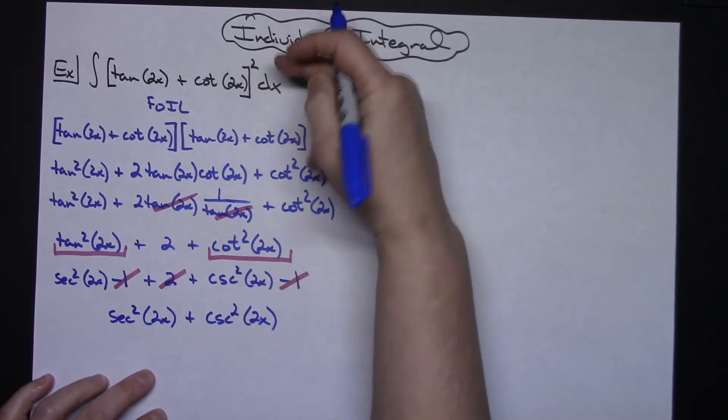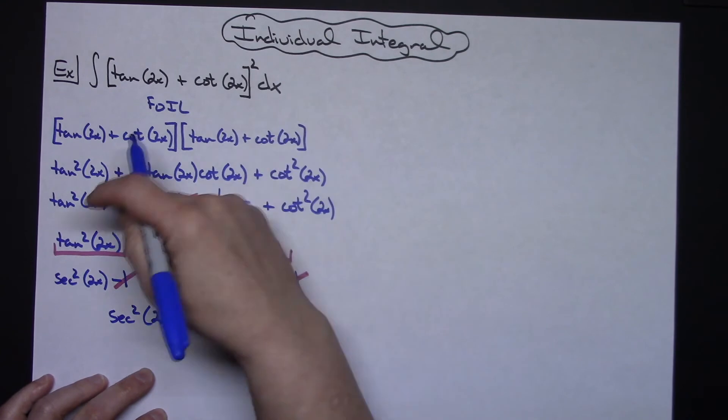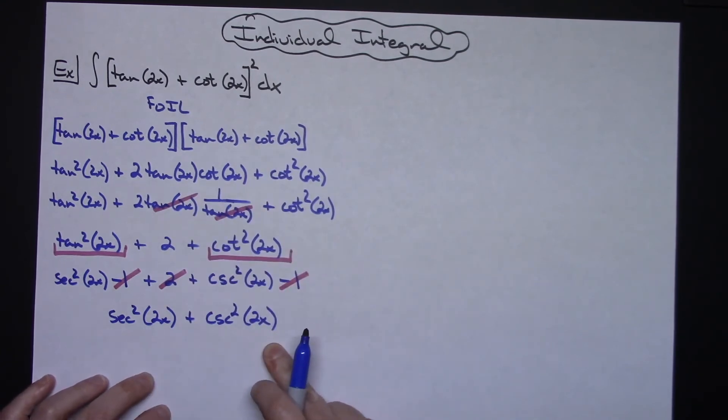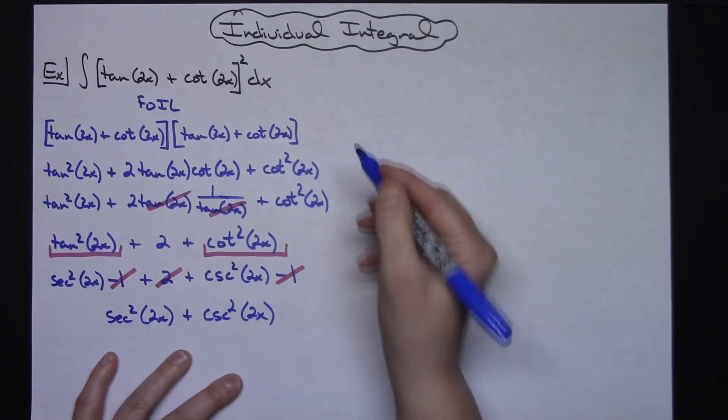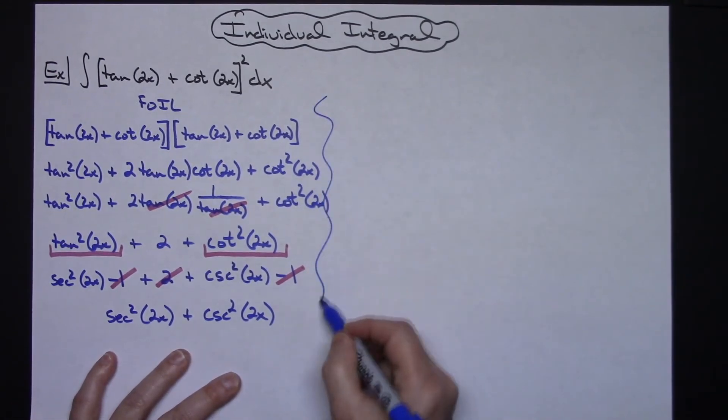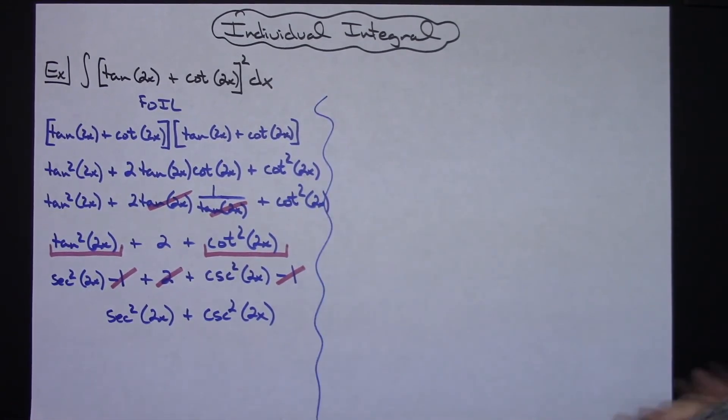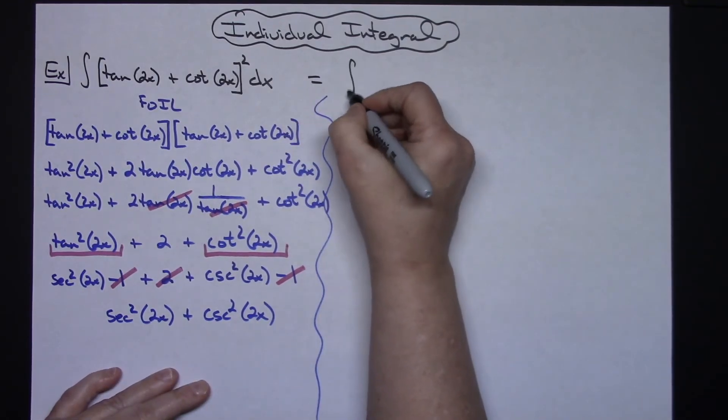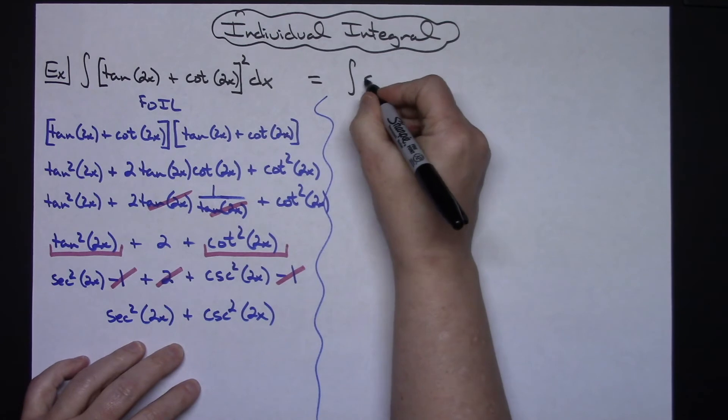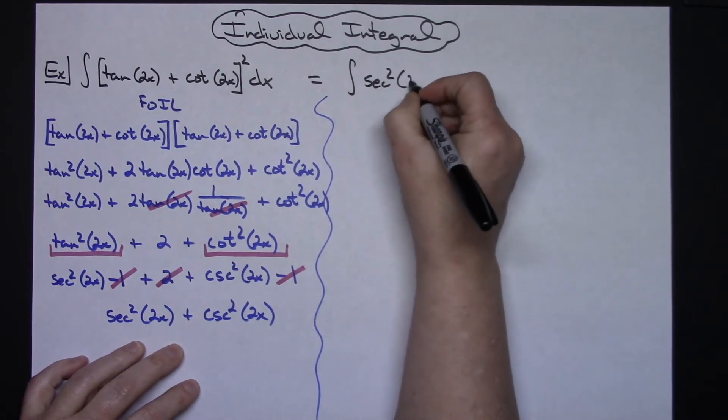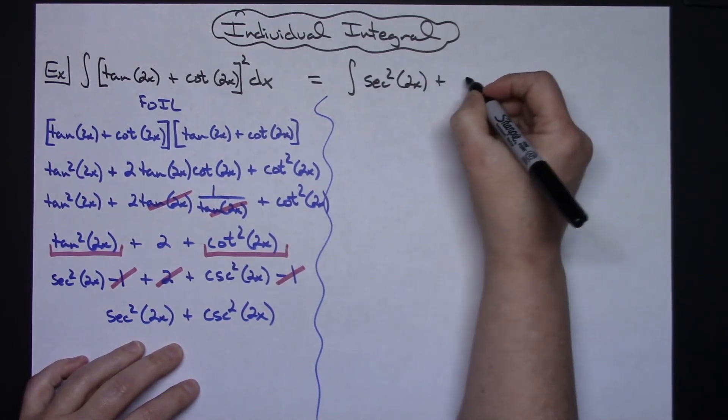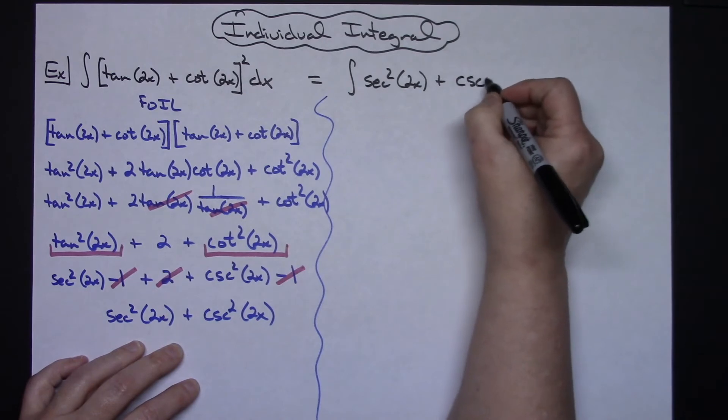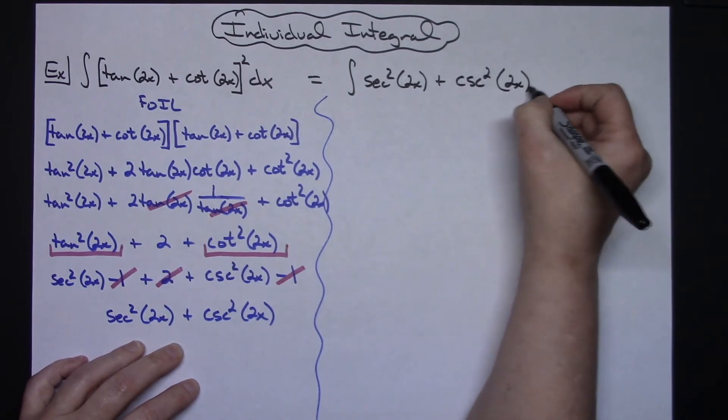Alright, so basically what that means is I've taken this expression I have foiled it out and I have gotten down to this. So now I can use this as what I am going to integrate. Okay, so let's make some more room here and go over here. So now it becomes the integral of secant squared 2x plus cosecant squared 2x dx.